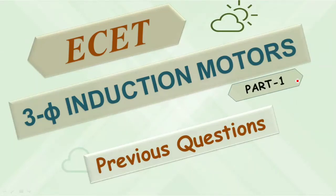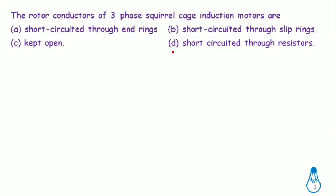In this video on induction motors, covering previous exam set bits: the rotor conductors of three-phase squirrel cage induction motors are short-circuited through end rings. The rotor conductors of squirrel cage induction motors are short-circuited through end rings.